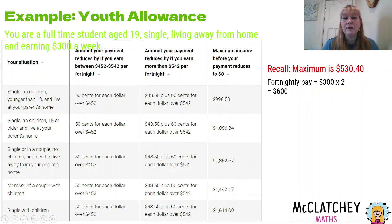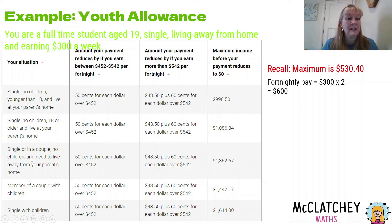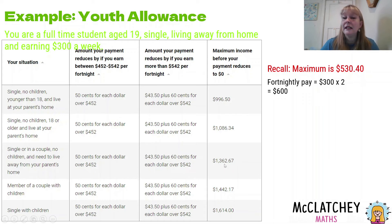This column over here tells us the most you can earn, and if you earn that amount you're going to get nothing from the government — after that point you get zero. So if we find our circumstance here — single, no children, living away — we're actually in this third row down. And we look at the last column: we're earning less than $1,362, so that's okay. We know we're in this column right here, so that's going to be the one we're interested in.